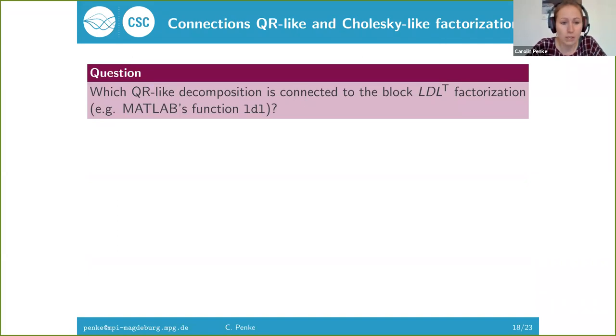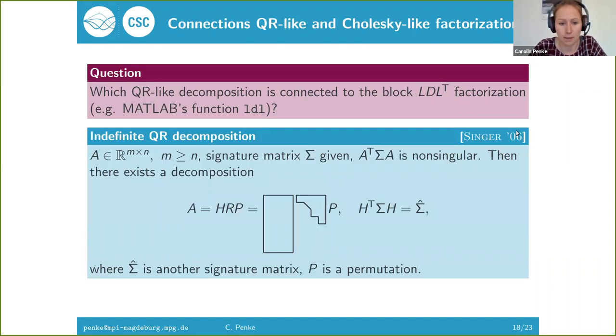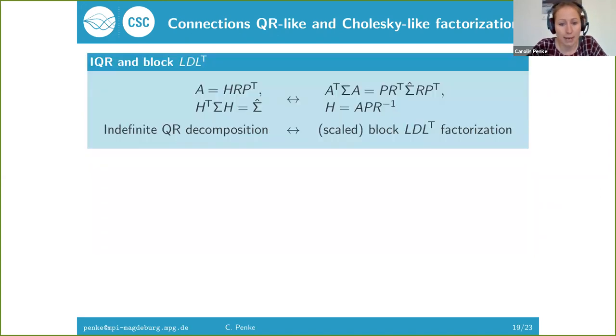The question arises which QR-like decomposition is connected to the block LDLT factorization, the one that's actually being used all the time. The answer is given in this work here. They call it the indefinite QR decomposition. It looks quite similar to the hyperbolic QR decomposition, but now we allow, similar to the block LDLT decomposition, two by two blocks on the diagonal of R and we have another permutation. We have the same connection between the indefinite QR decomposition and the block LDLT decomposition. We can compute the indefinite QR decomposition via the block LDLT decomposition.